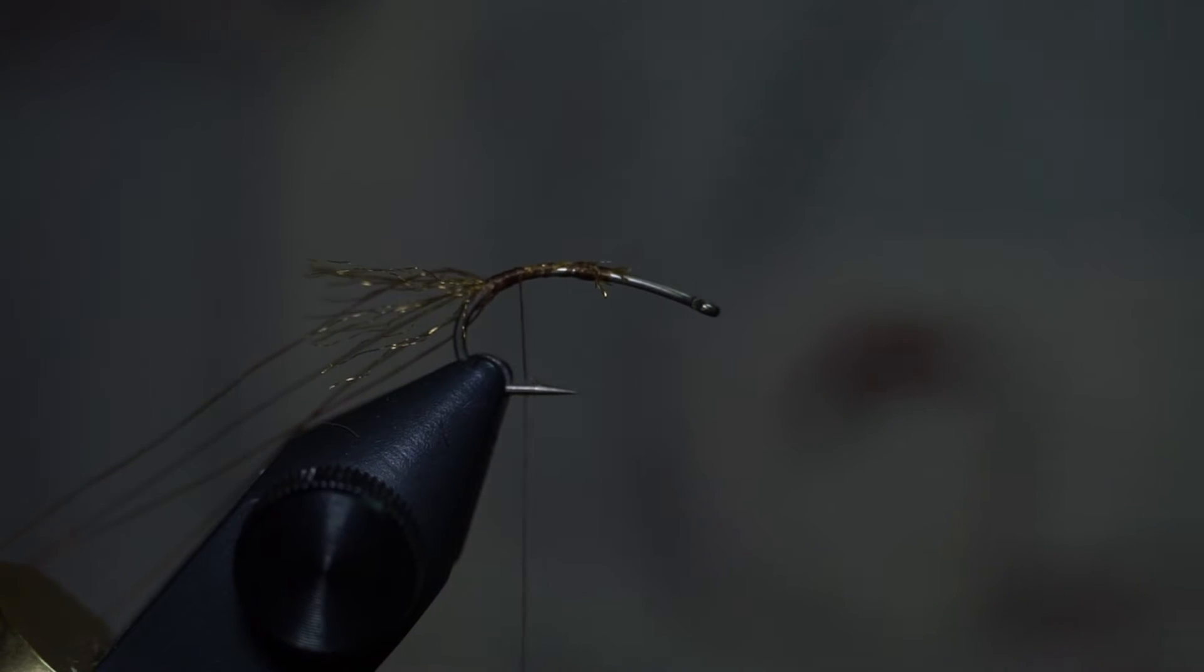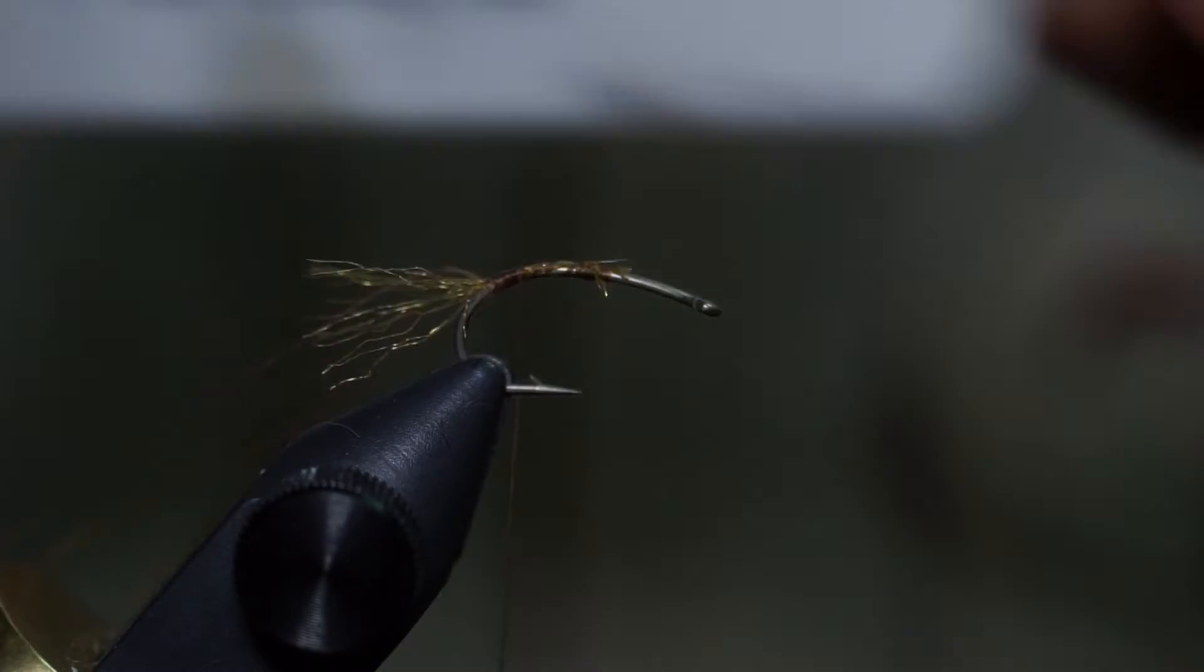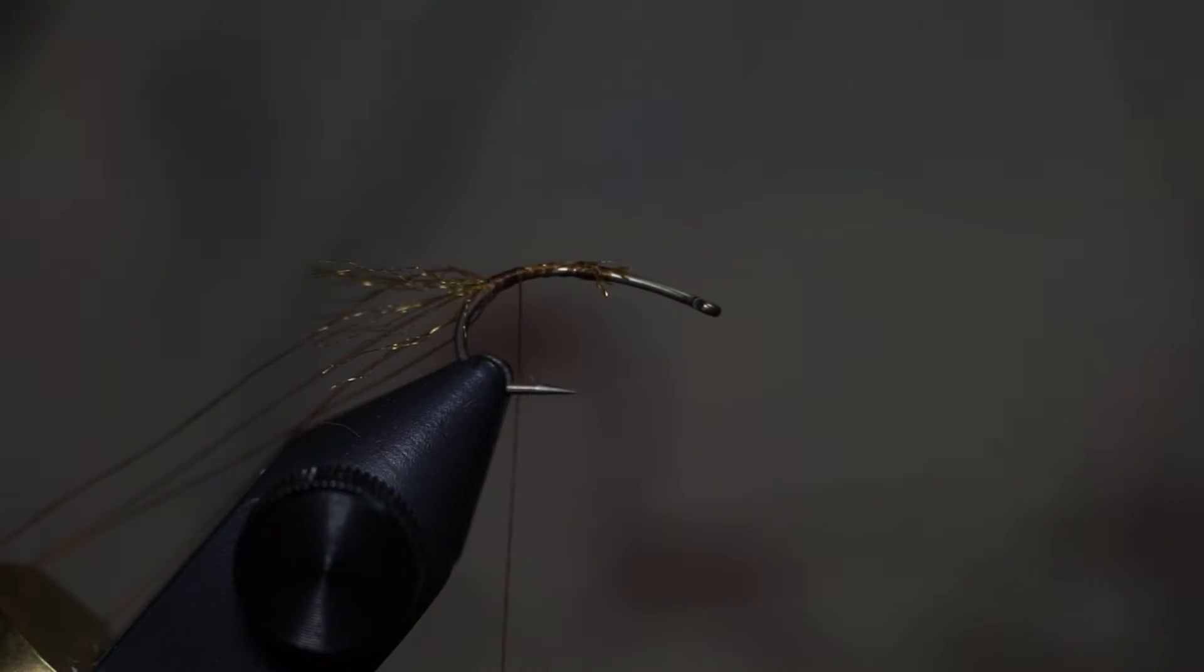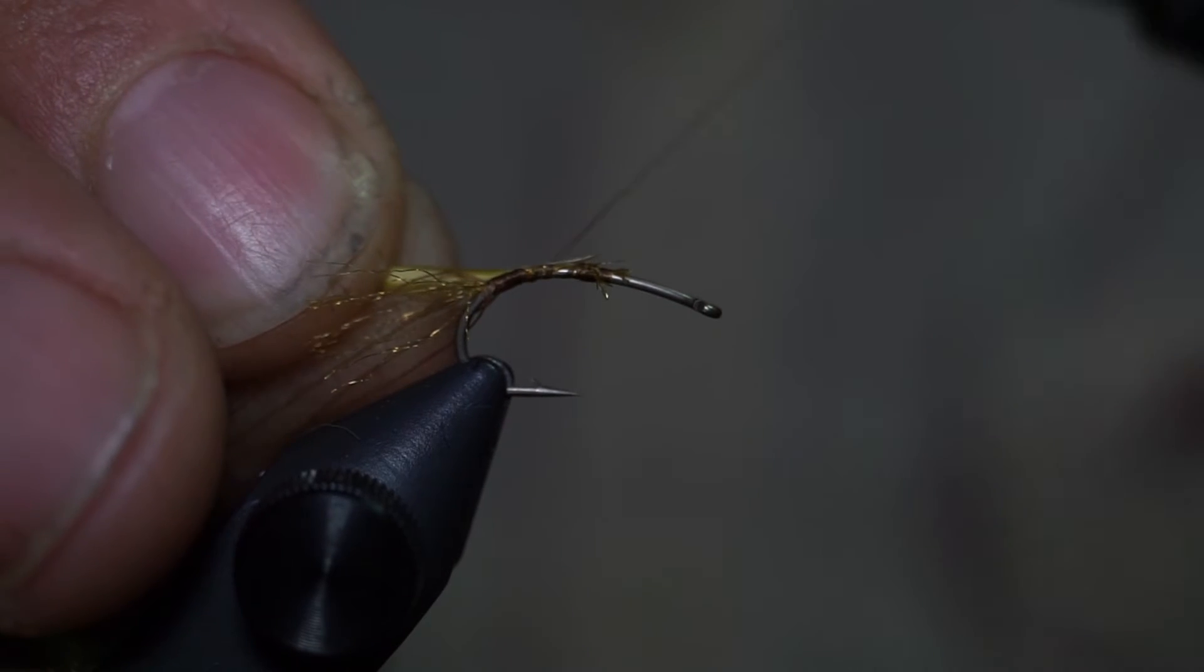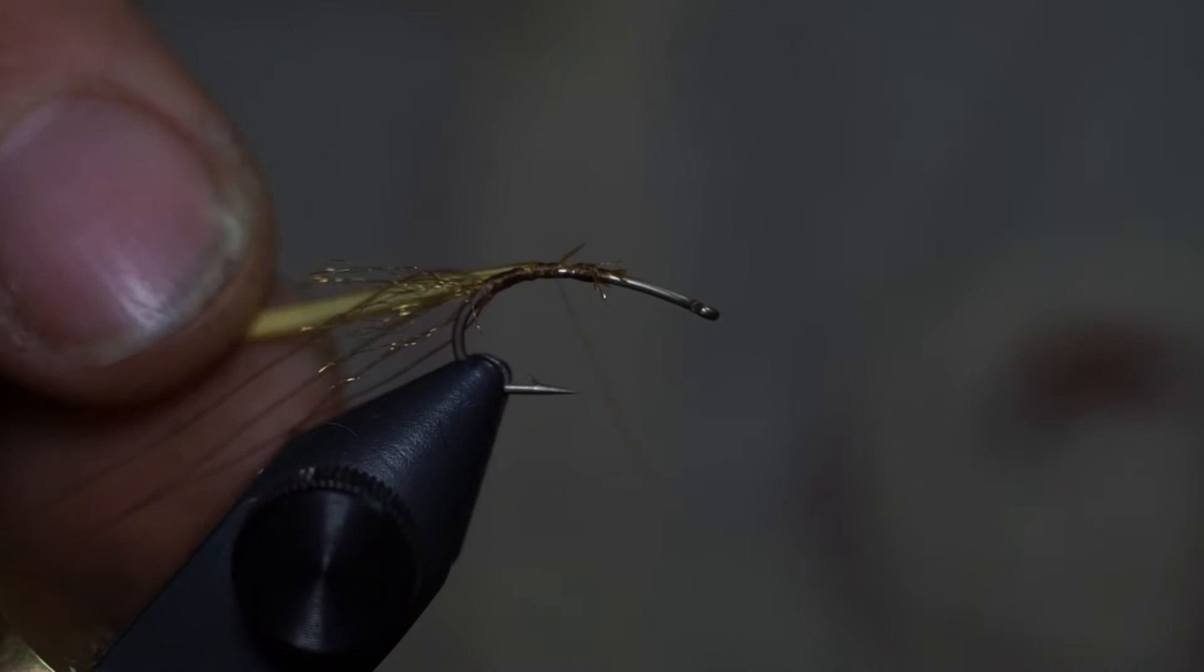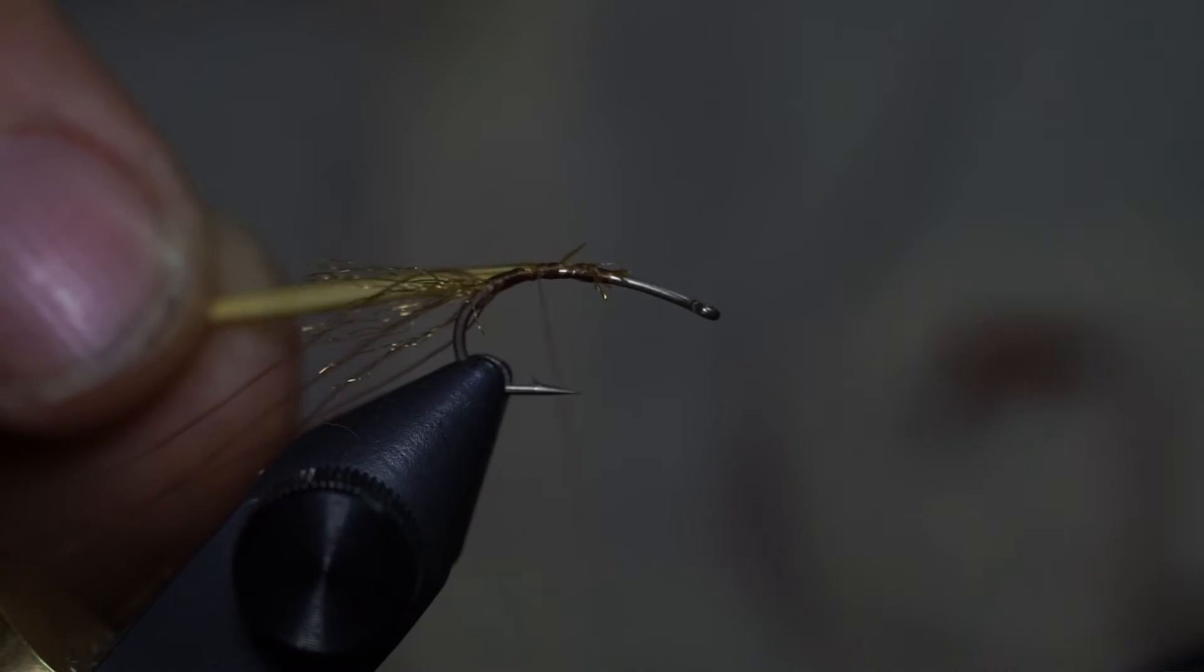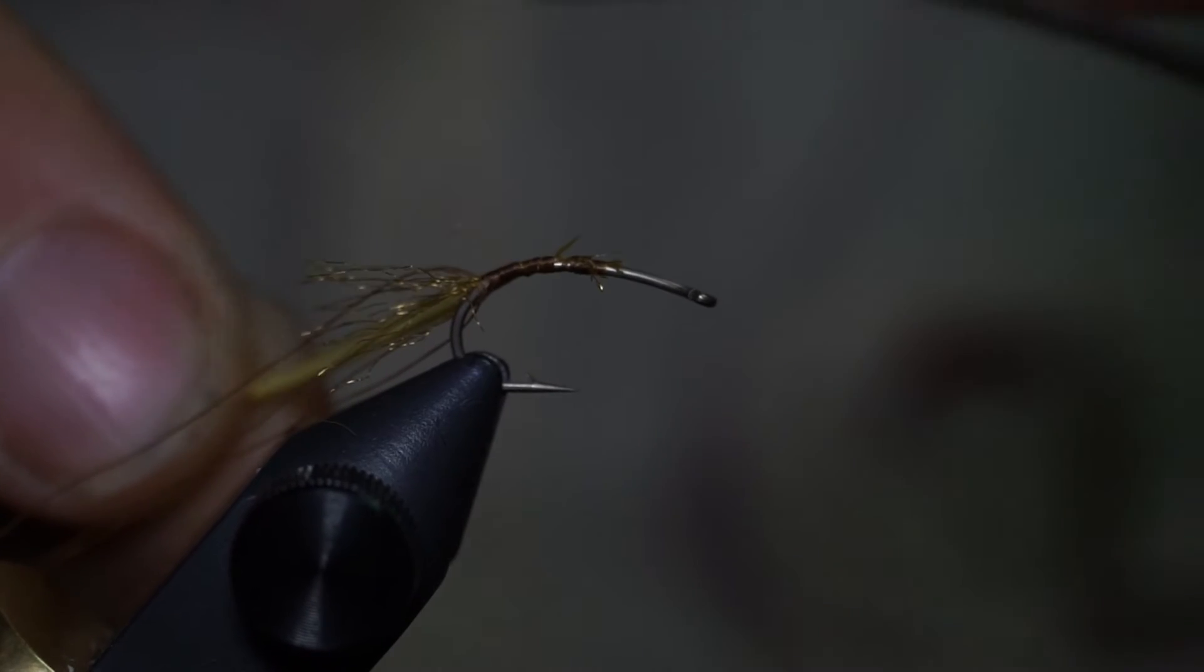Next I have stripped goose biots from Nature Spirit in Pale Morning Dun. And I'll strip off two of those biots, tie them in with their tips, with the bend of those biots towards me.